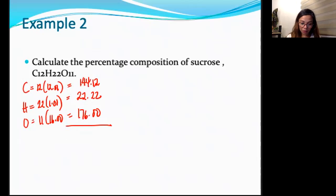We get the total mass or the molar mass of the substance. So, 144.12 plus 22.22 plus 176.00. So, that gives us 342.34 grams per mole. Kindly check. So, what are we going to do with the molar mass? Divided in each part. So, we have 342.34. Then you multiply it by 100. So, let's try that.